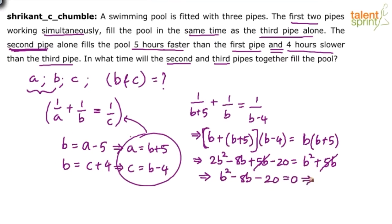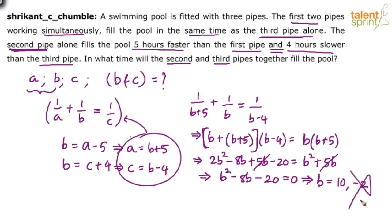Factoring the quadratic: (B minus 10)(B plus 2) equals zero, so B is either 10 or minus two. Since B represents time, it cannot be negative. Therefore B equals 10 hours. Since C equals B minus four, C equals 10 minus four, which is six hours.